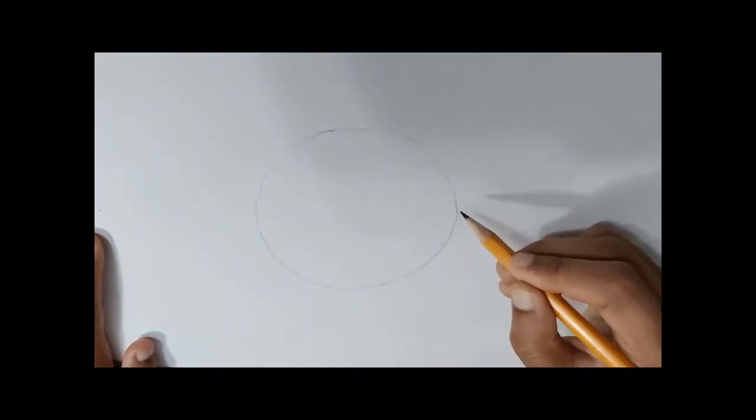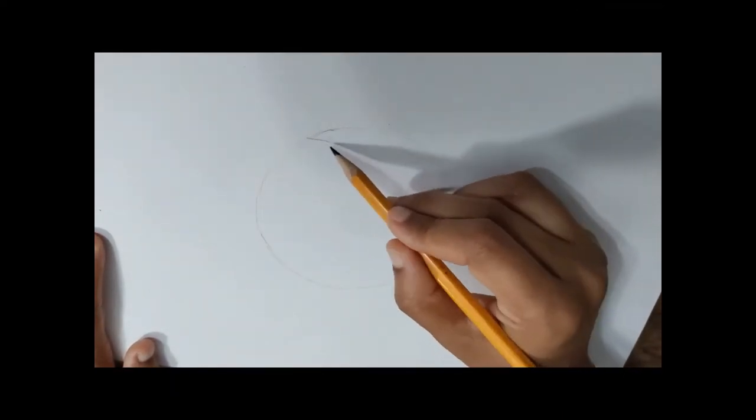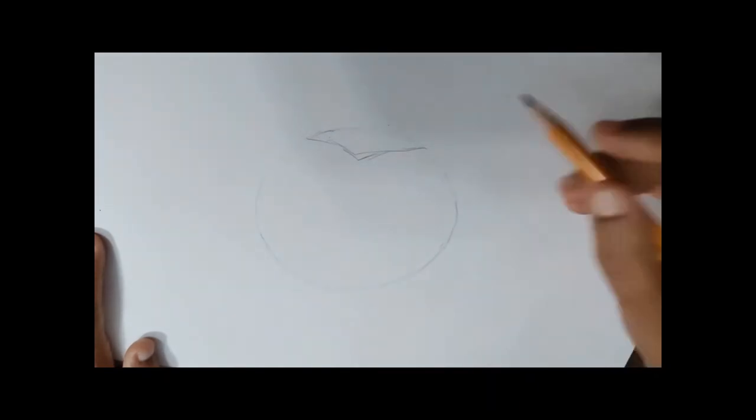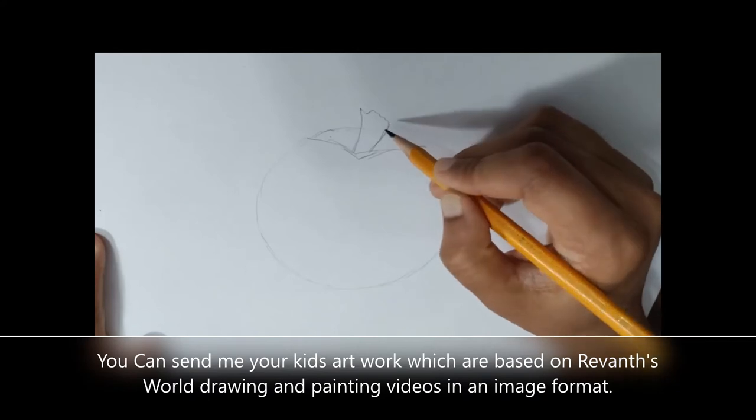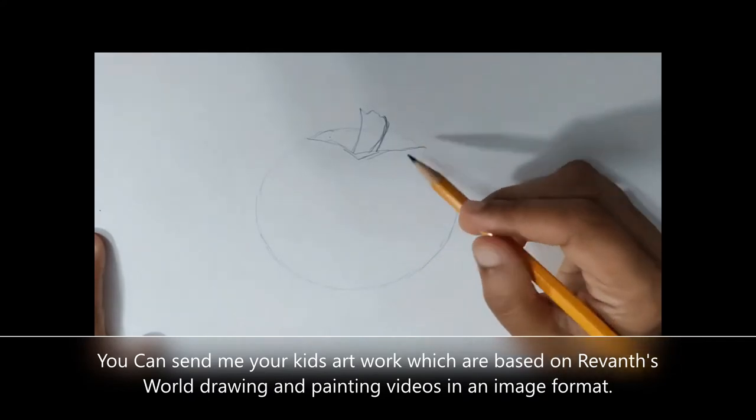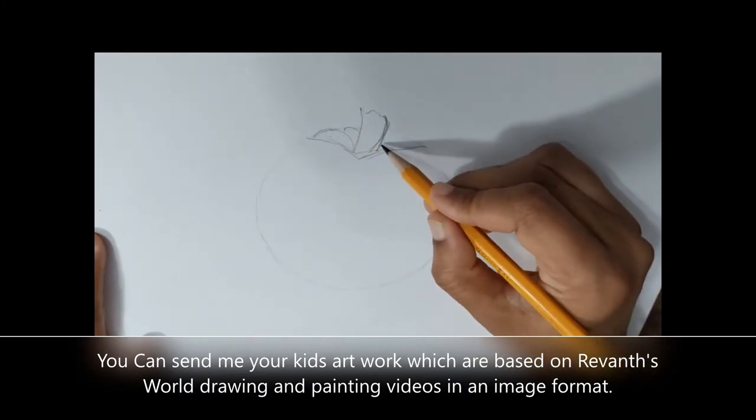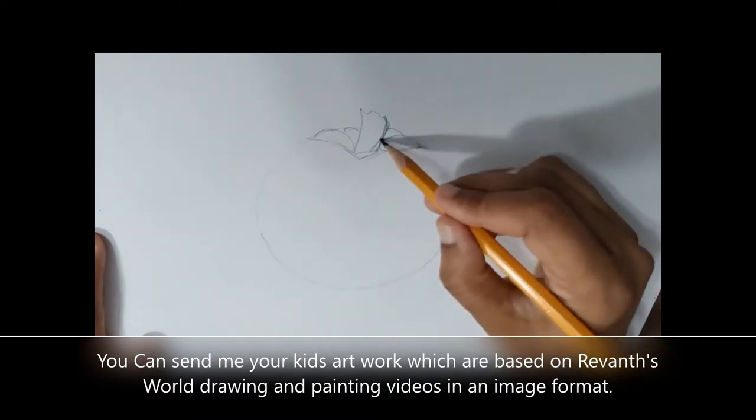Use your pencil and draw a circle or oval shape like this, how I am doing it. No need to be a perfect shape, perfect oval or circle shape. Once you're done with your outline, we are going to fill it up with some scales.